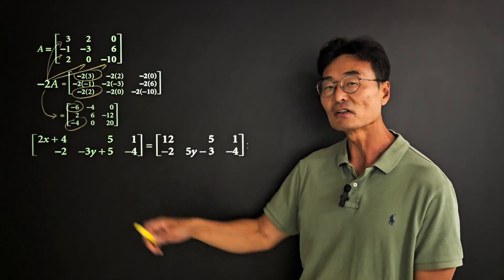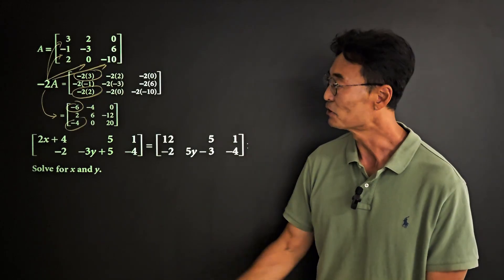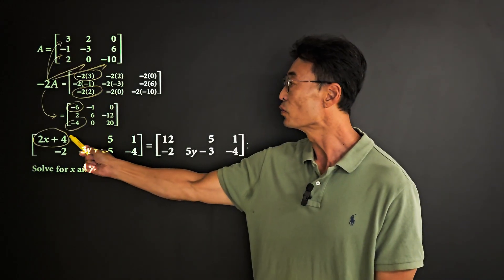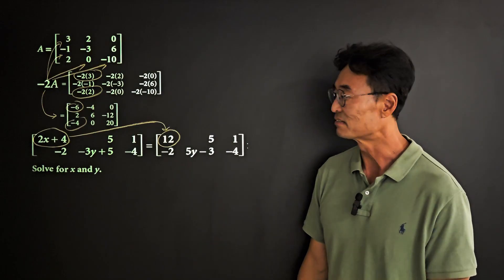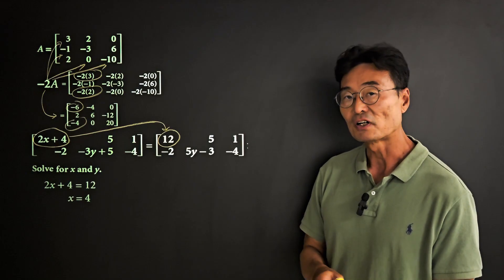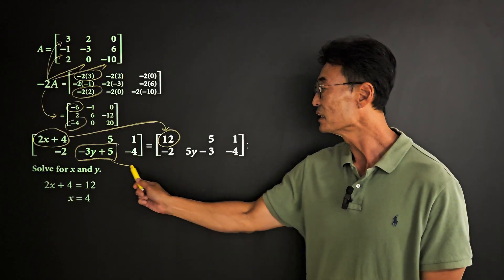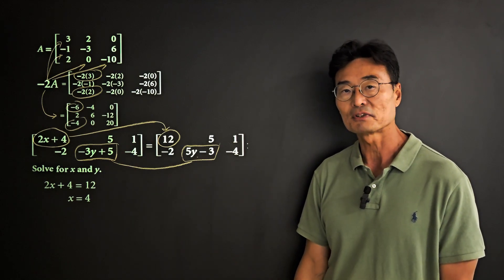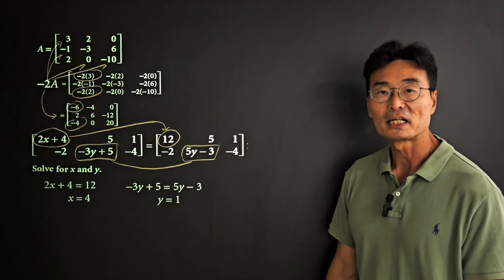There's another case where we're given a matrix on the left and another matrix on the right, and we're asked to solve for the value of x. We're going to take 2x plus 4, which is in the first row, first column, and set it equal to the number in the same position, which is 12, giving us the equation 2x plus 4 equals 12, or x equals 4. To solve for y, we'll take negative 3y plus 5 in the second row, second column, and set it equal to 5y minus 3, which is in the same position, and solving that equation gives us y equals 1.